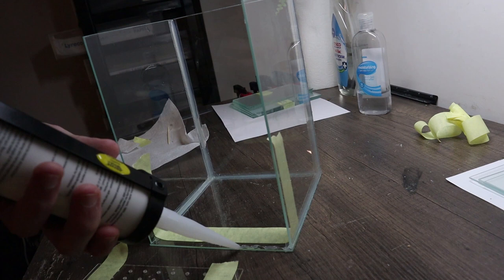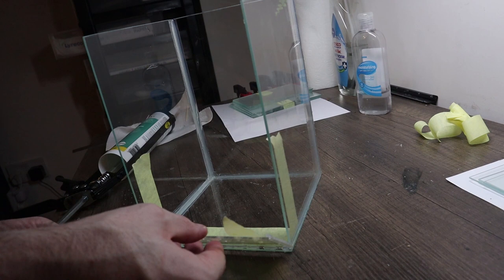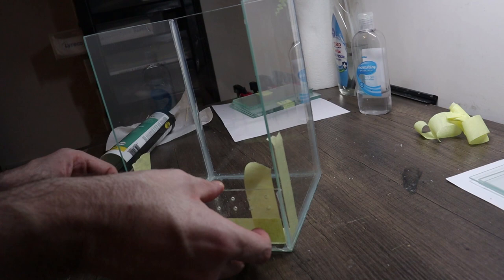We can now attach that front panel, which is pretty much the same way we've done things before. Mask off the edges, apply the silicone. You can do this at the same time as when you put the other bits together if you want. It's just that my acrylic didn't arrive until a day later, which is the only reason I've done it in this order.